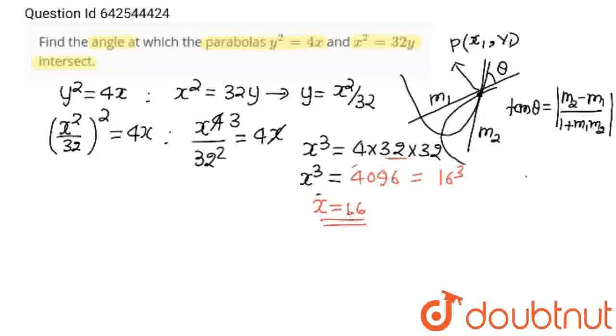And when x=16, we can easily find y coordinates from this equation. 16² is equal to 32y. We can write 16×16=32y. And from here we'll get y=8. So the point of intersection P is (16, 8).